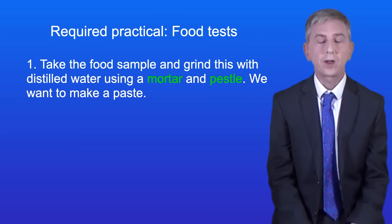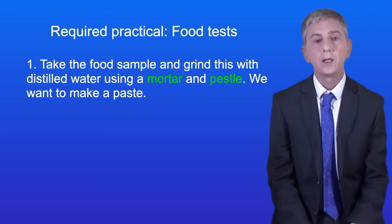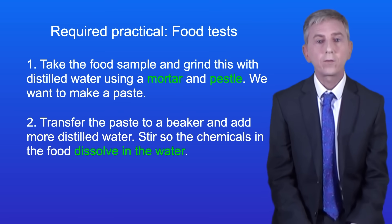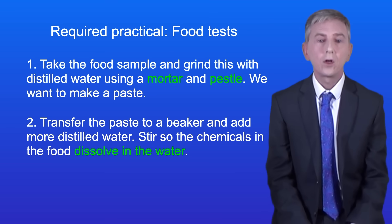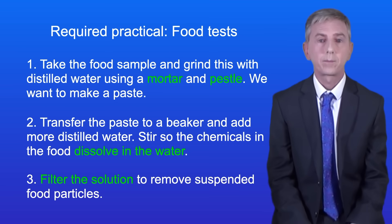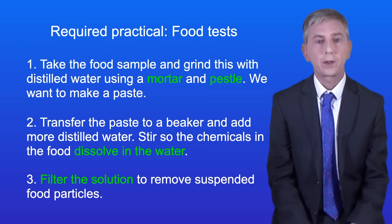First we take our food sample and grind this with some distilled water using a mortar and pestle — we want to make a paste. We then transfer the paste to a beaker and add more distilled water. We stir this so the chemicals in the food dissolve in the water. Next we filter the solution to remove suspended food particles. At this stage we can test our solution for the chemicals present.